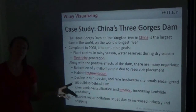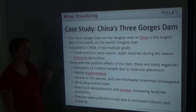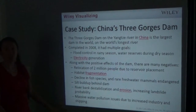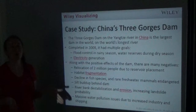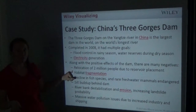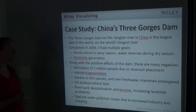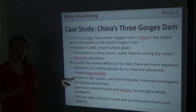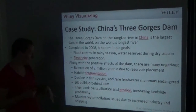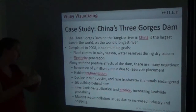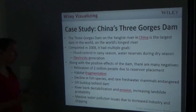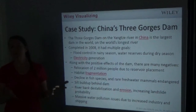Along with the positive effects of the dam there are many negatives. Two million people had to be relocated due to reservoir placement. There was habitat fragmentation, declining fish species, and rare freshwater mammals became endangered — fish can't go upstream to spawn past a dam. Silt builds up behind the dam, causing riverbank destabilization, erosion, and increased landslide probability. There are also massive water pollution issues due to increased industry and shipping.